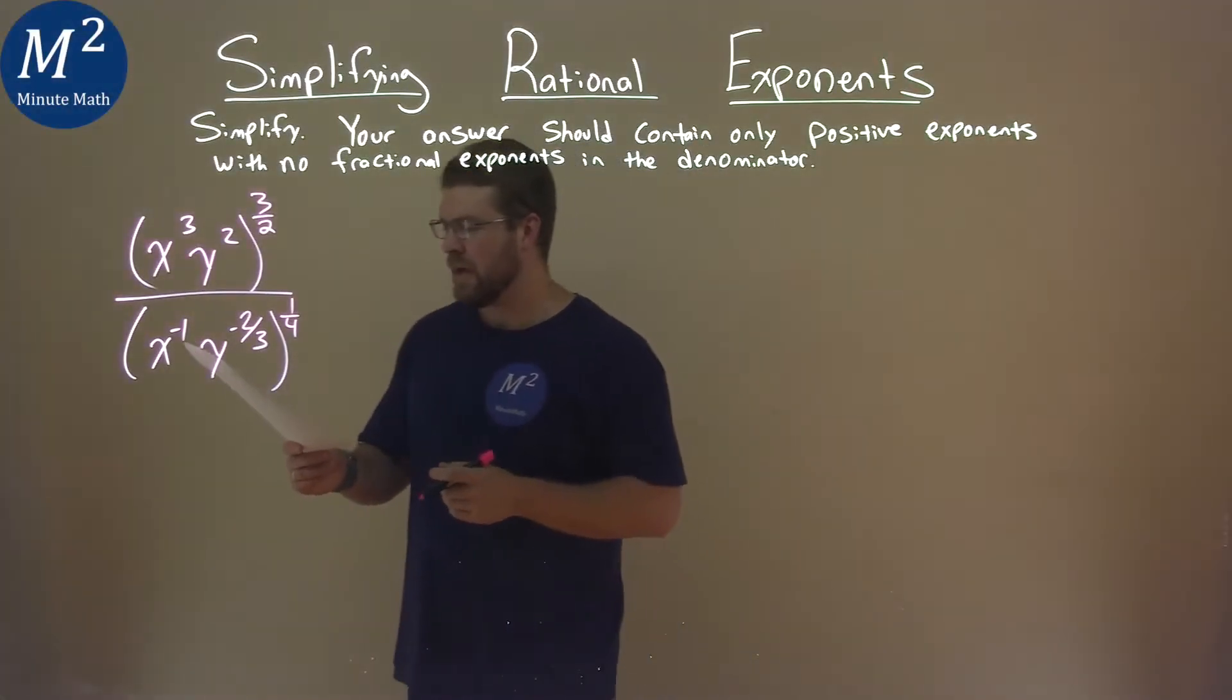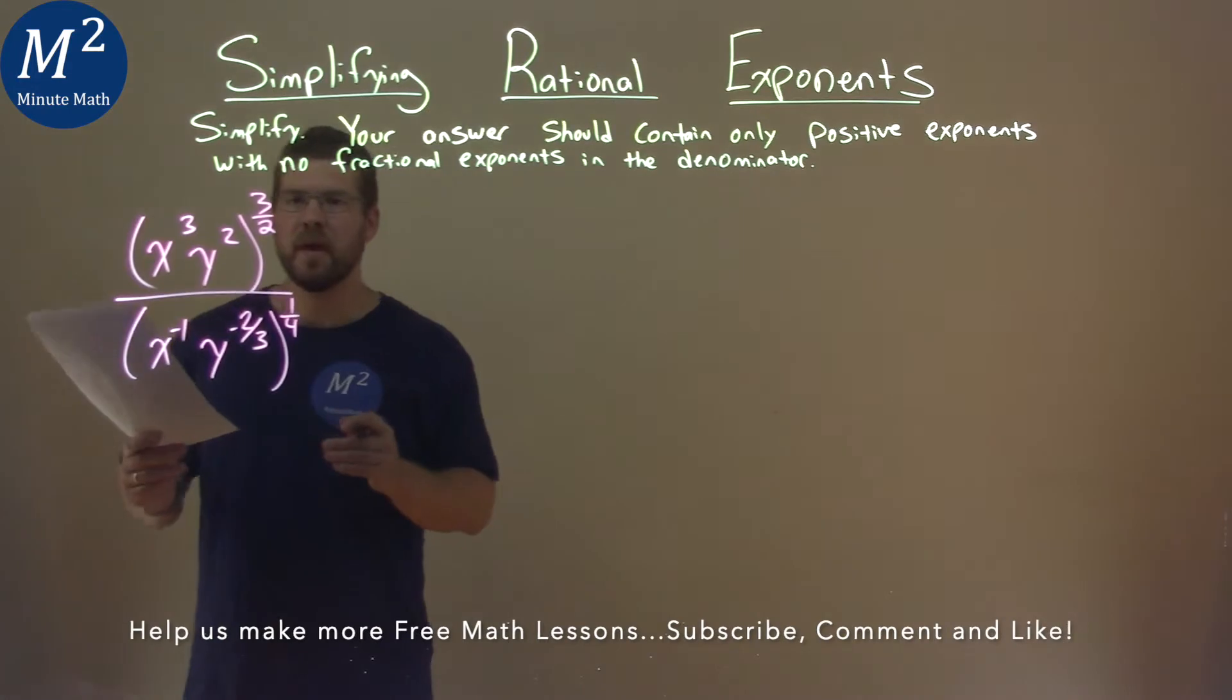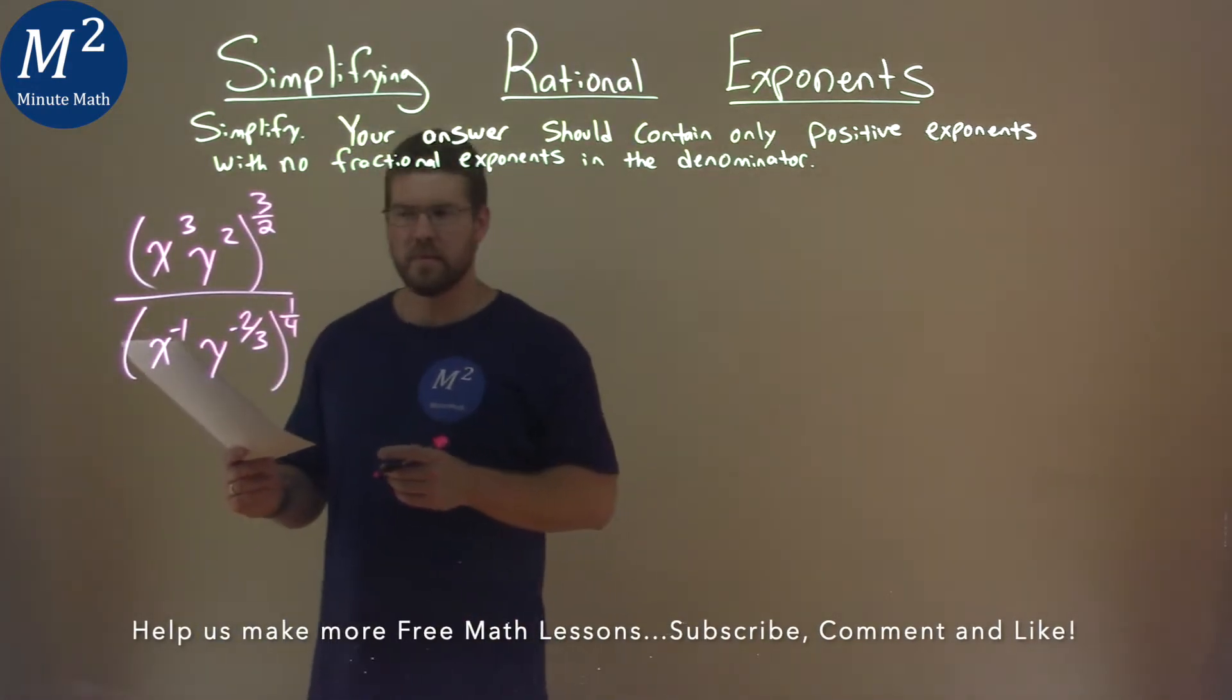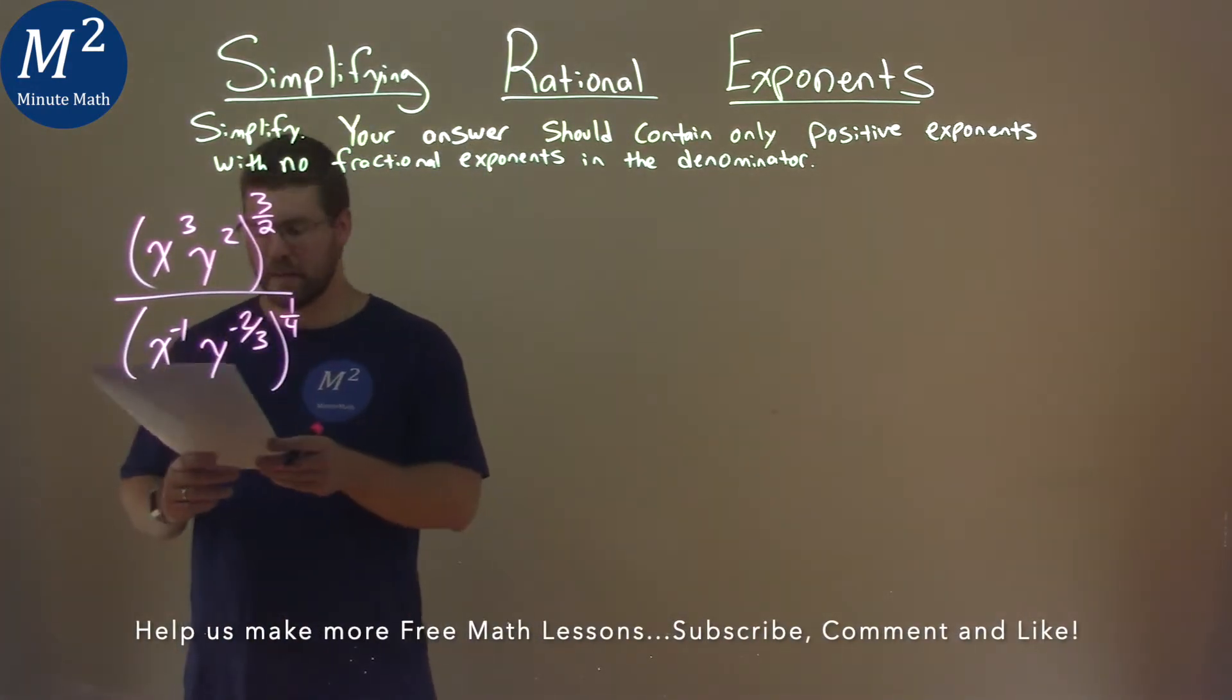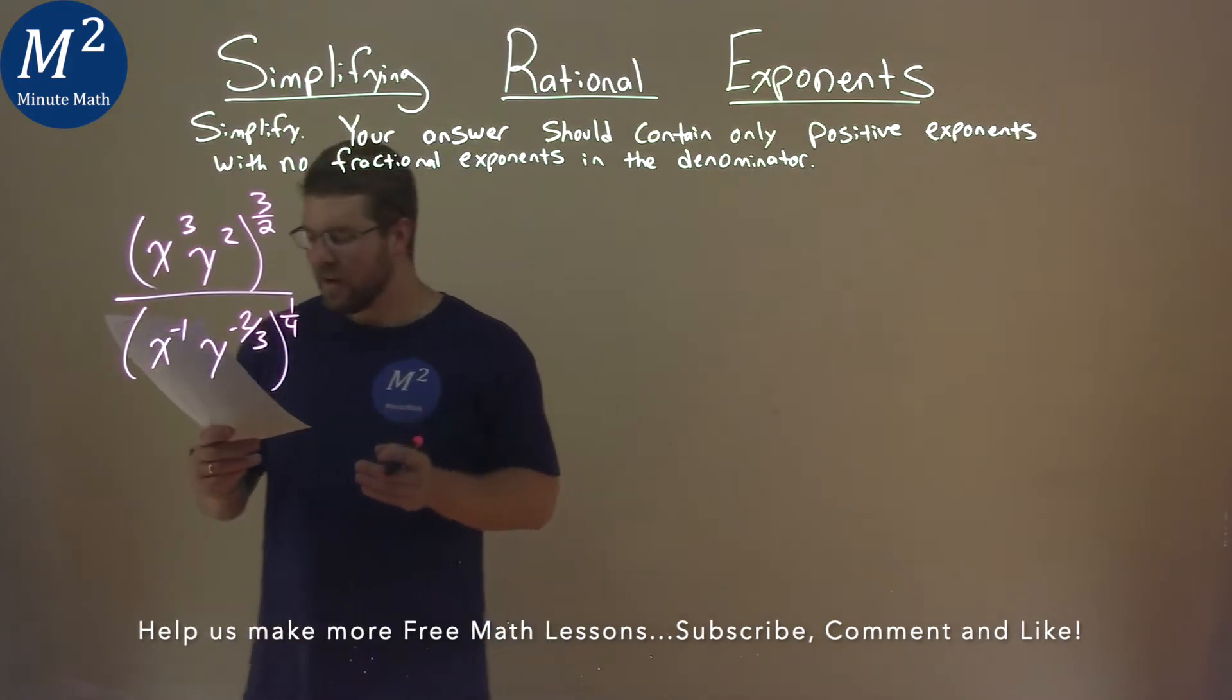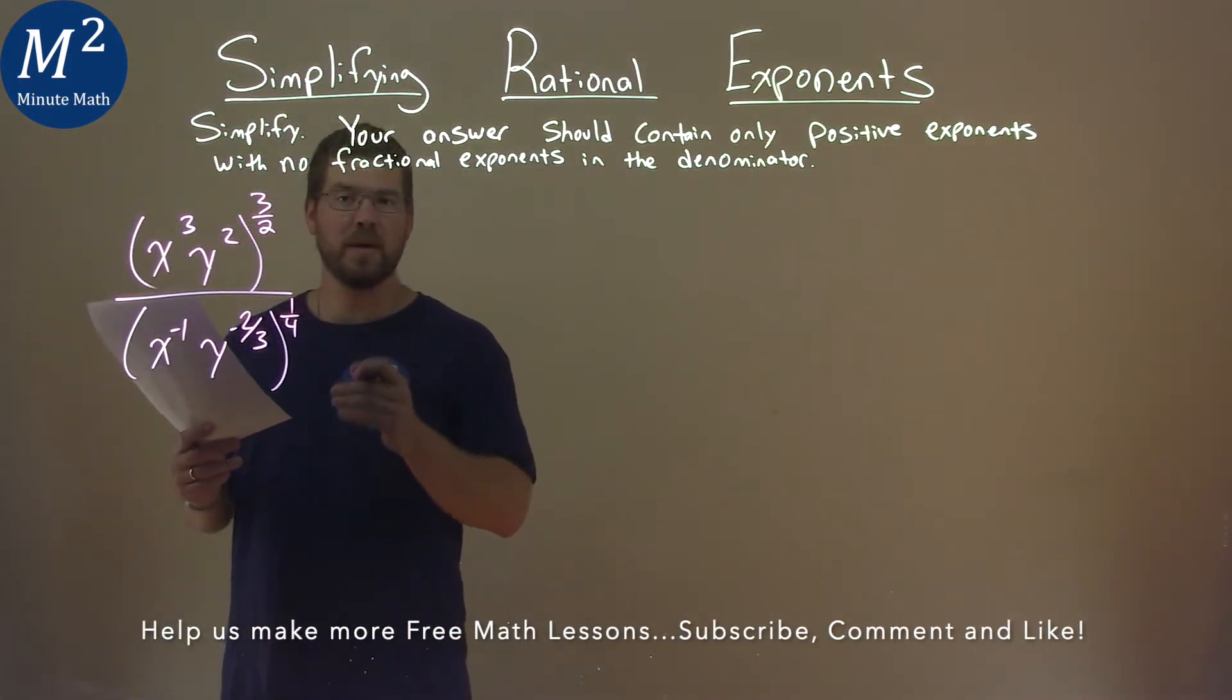We're given this problem right here: x to the third, y squared, all to the three-half power, divided by x to the negative one times y to the negative two-thirds, all to the one-fourth power, and we've got to simplify.